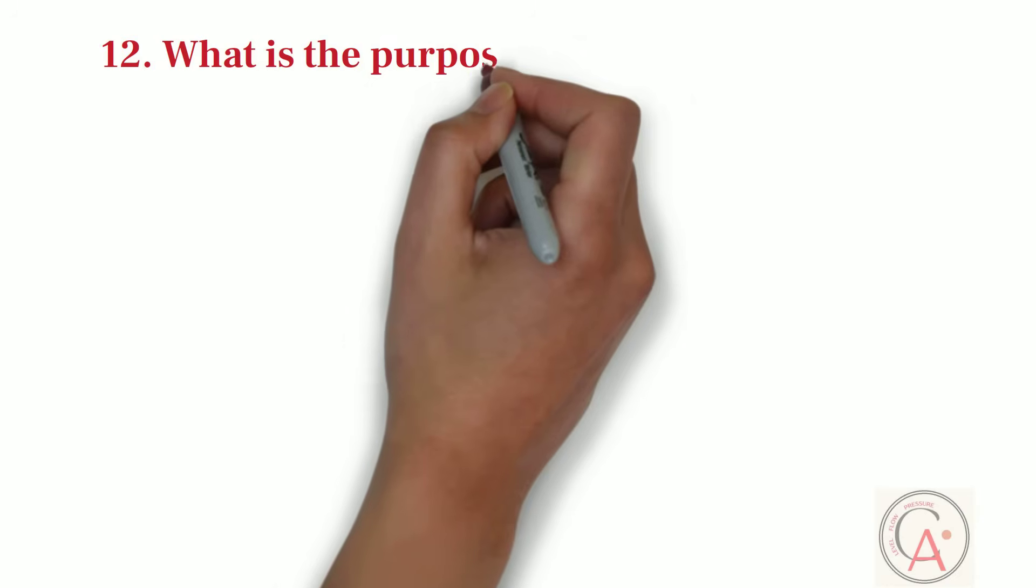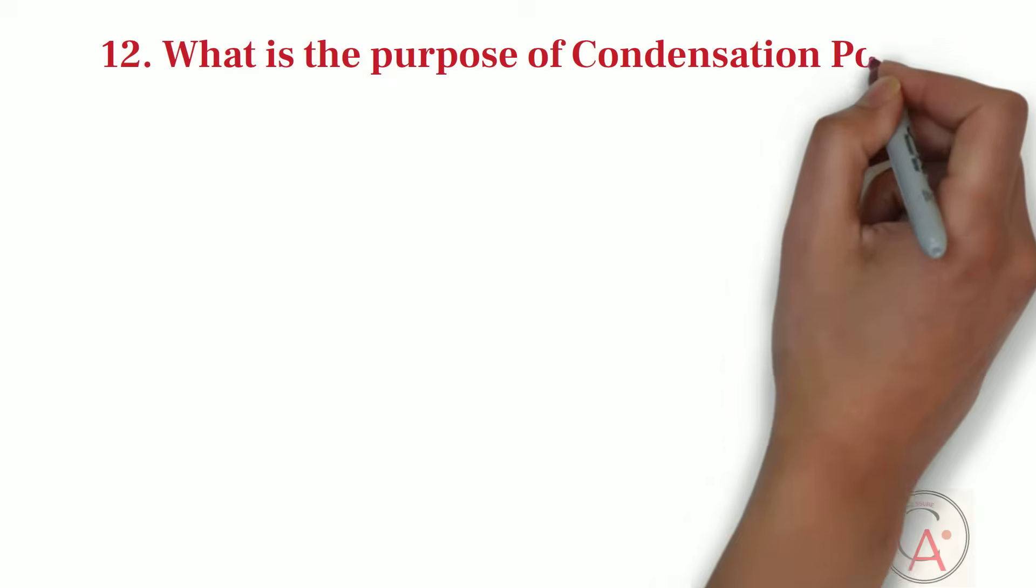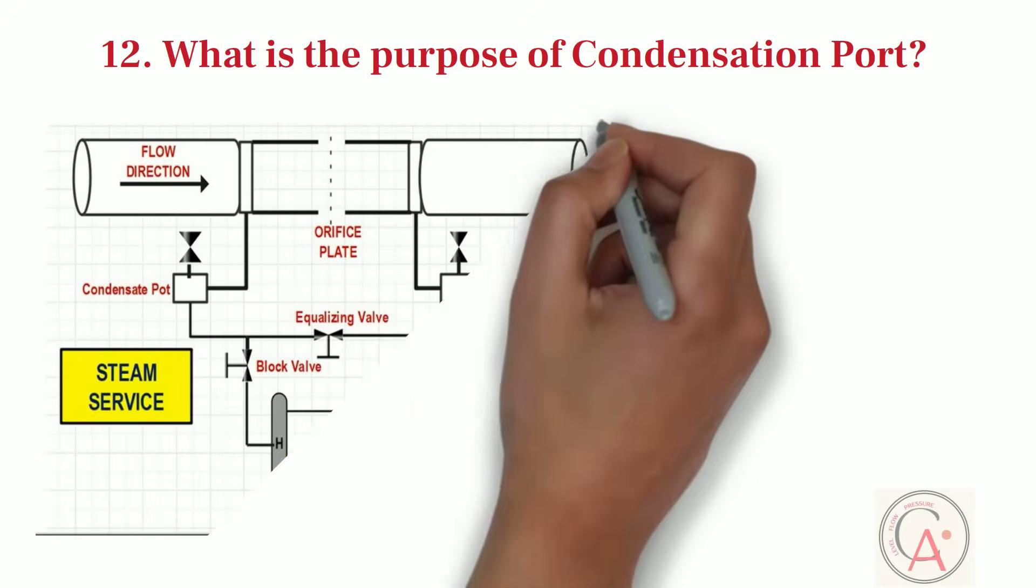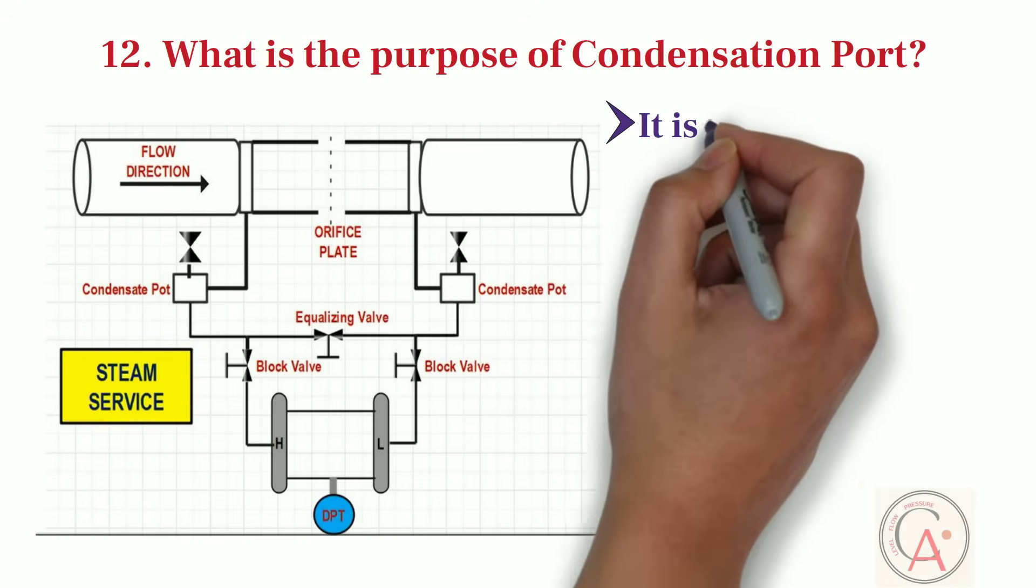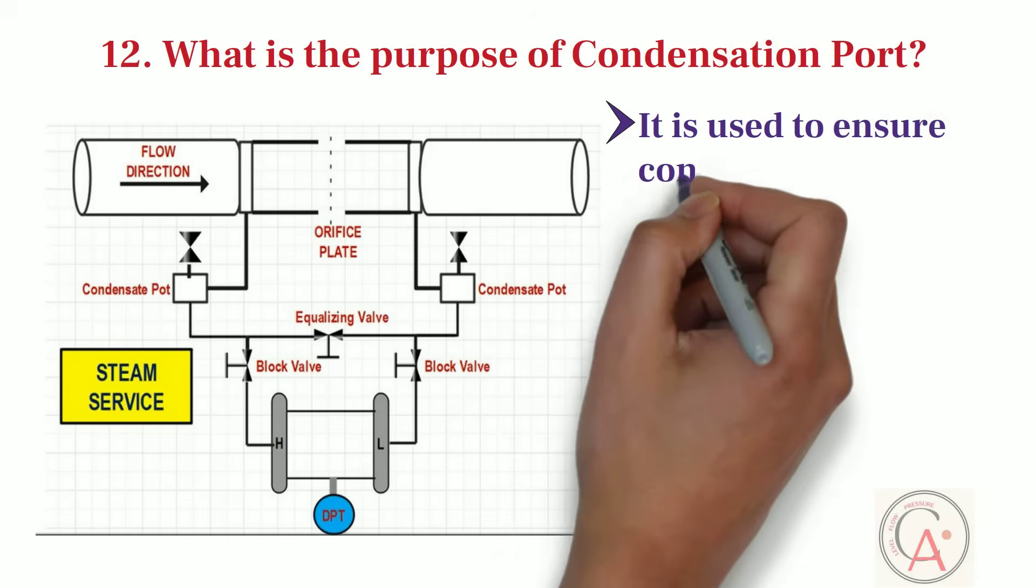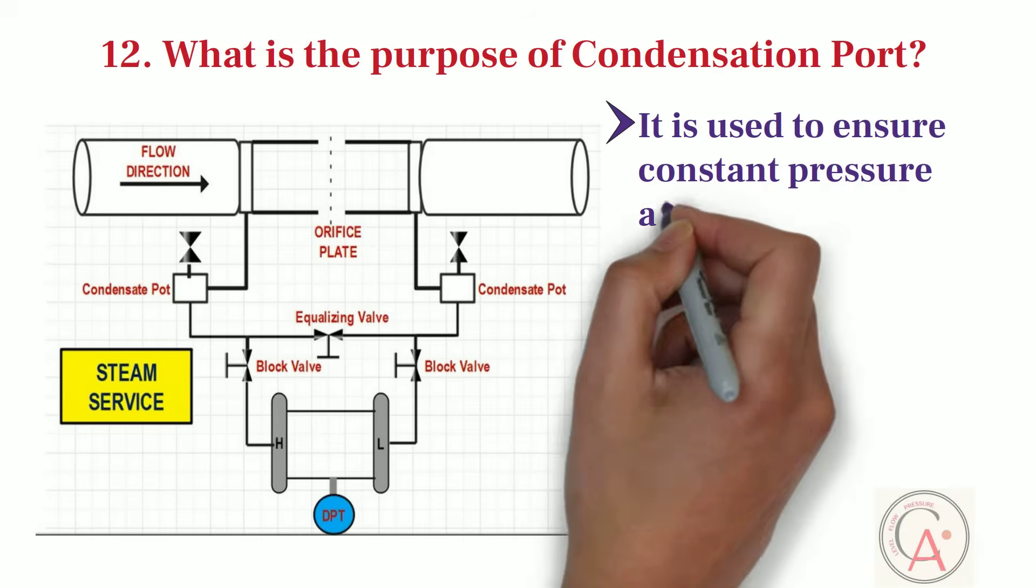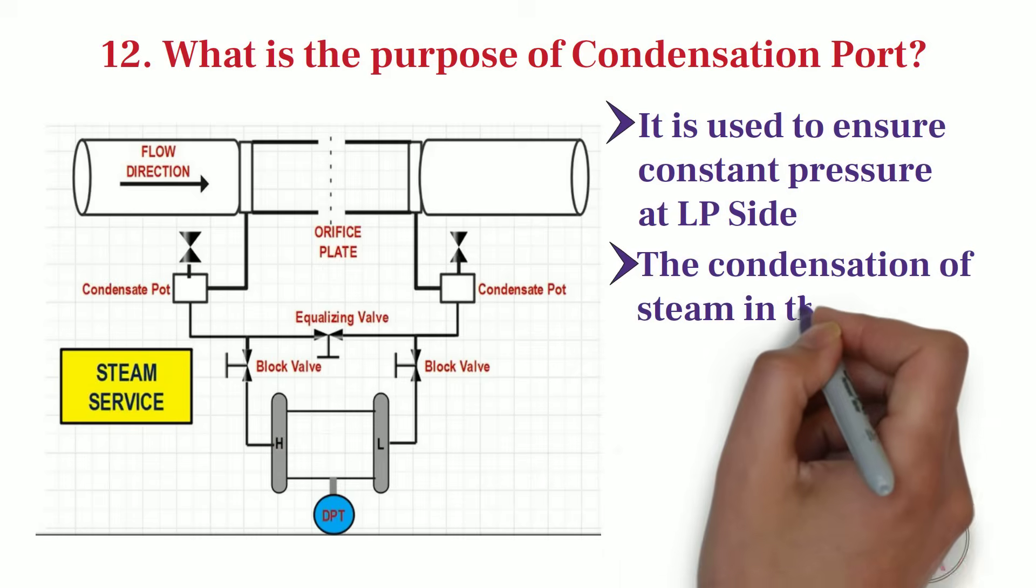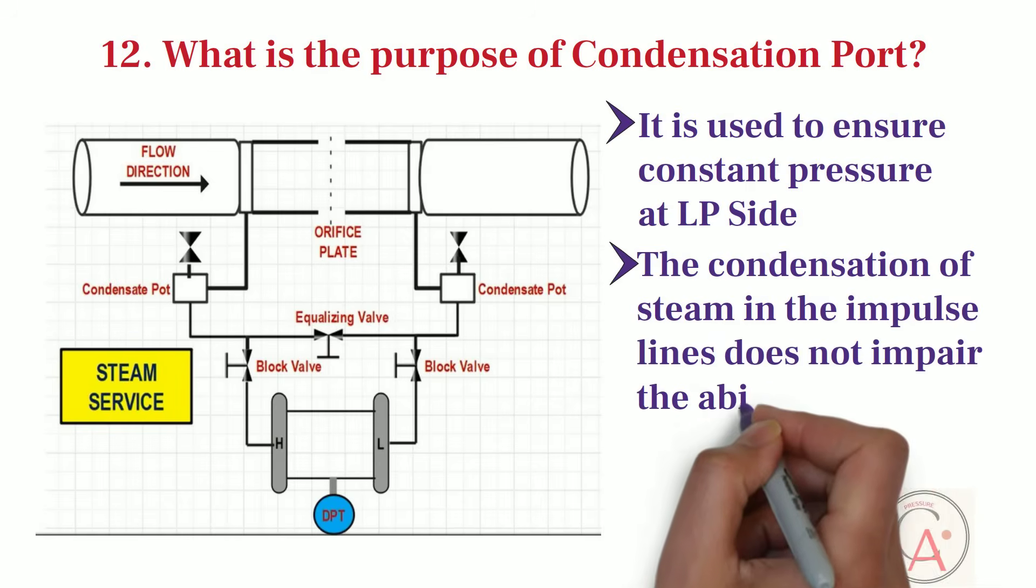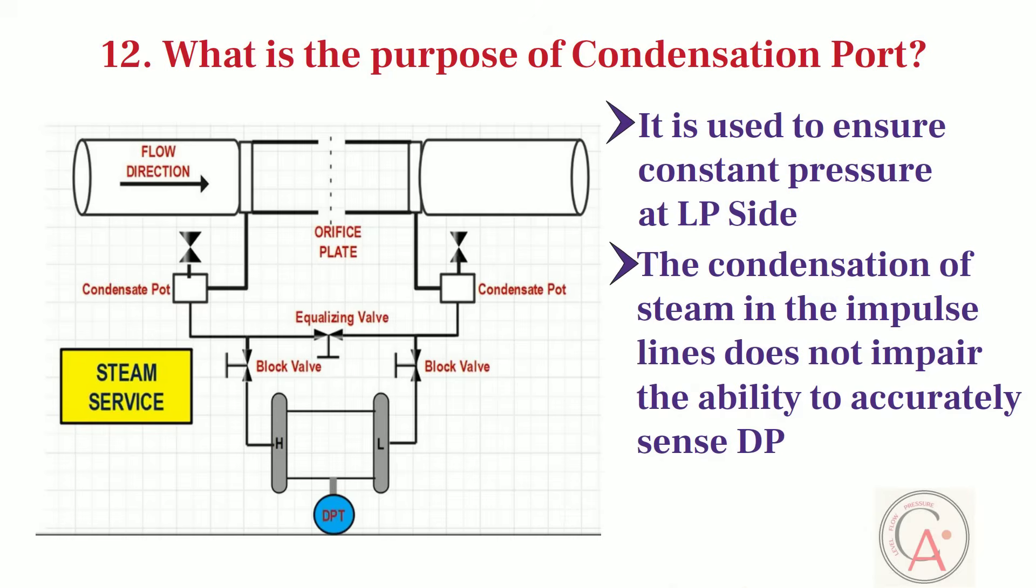Twelfth question is, what is the purpose of condensation pot? There are mainly two applications of condensation pot in steam service. First of all, condensation pot is used to ensure that constant pressure at low pressure side. Secondly, it ensured that the condensation of steam in the impulse lines does not impair the ability to accurately sense differential pressure fluctuations, and to minimize gauge line error.